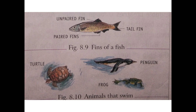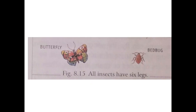Turtles have four limbs — two in the front and two at the back — and with these four paddle-like limbs they swim in water. Penguins have two wings as their forelimbs, and with these they swim in water. Frogs are amphibians — in water, frogs use their webbed feet to swim, and when on land they use their long hind legs for jumping or hopping.